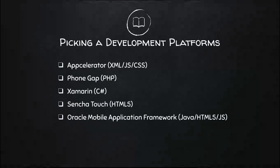PhoneGap uses PHP, so if you're a PHP user, PhoneGap may be what you want to use. Xamarin is for those that like C#. Sencha Touch uses HTML5 — I kind of like Sencha Touch, but the only problem is you have to pay for an initial license, even to get started — it's like $4 a month. But it's on the list because it is becoming popular.